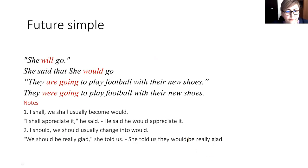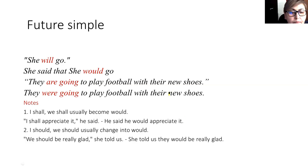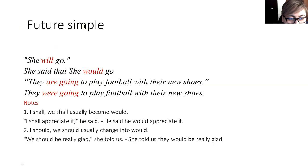Future simple. Moving to the future, we have two future tenses in English: future simple, which uses 'will,' and future 'going to.' For example: 'she will go' — it changed into 'she would go.' If it is 'will go' in quoted speech, then in reported speech, indirect speech, it is 'she said that she would go.' That means 'will' changes into 'would.'